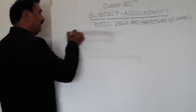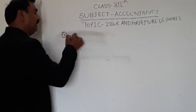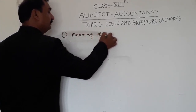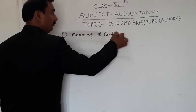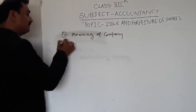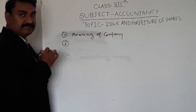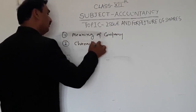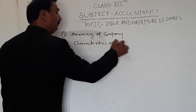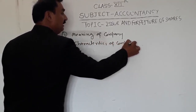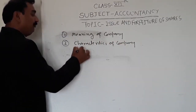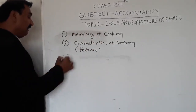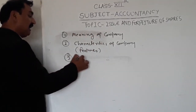Now we can start the company chapter in the following steps. In the first step we will discuss the meaning of company. In the second step, the characteristics of company — also known as features of company. And the third step is kinds of company.